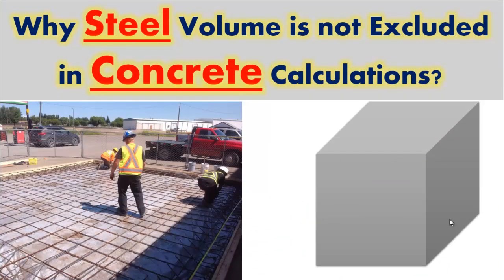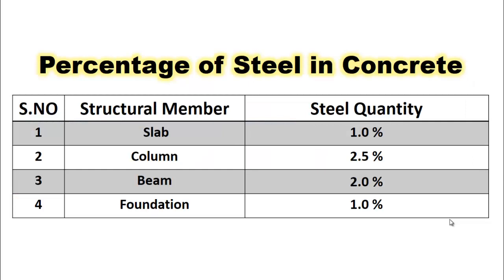The answer to this question is simple: the quantity of steel is very less as compared to the quantity of concrete. For each structural member the quantity of steel is very less — for a slab it is 1% of total volume, for a column it is up to 2.5%, for a beam it is 2%, and for a foundation it is 1%. Remember that these are just values from thumb rules, not from any code. So the quantity of steel compared to concrete is very less.